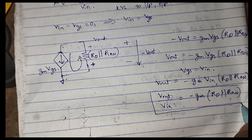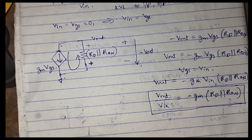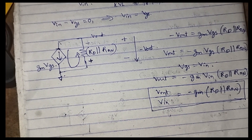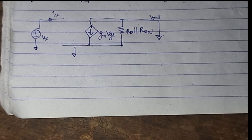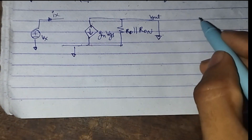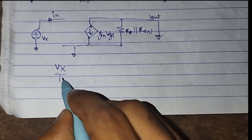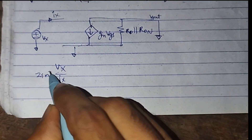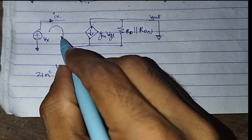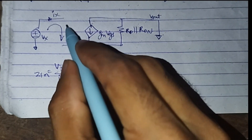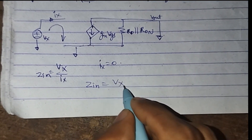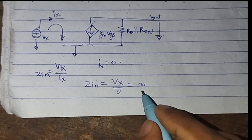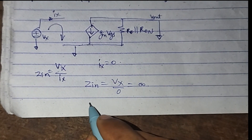This is the gain equation of the CS amplifier with resistive load. To find the input impedance, we ground the output node, connect an input test source VX, and find VX over IX. Since no current flows through this part because it is open-circuited, IX equals zero, so Z_in equals VX over zero, which is infinity. The input impedance of the CS amplifier is infinite.